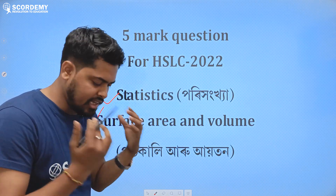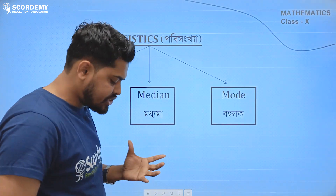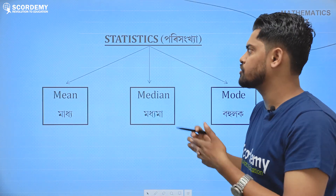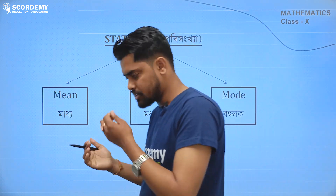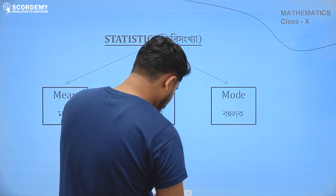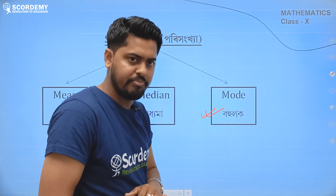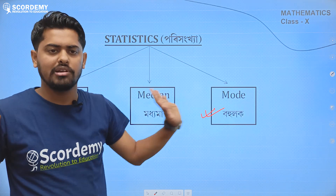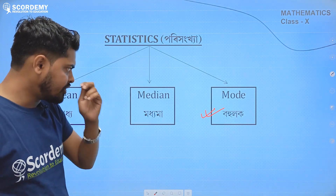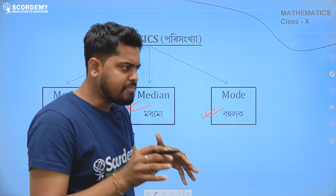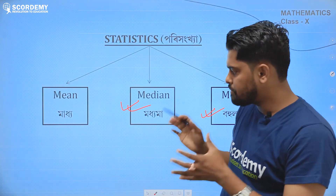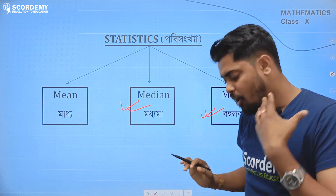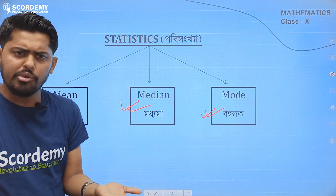I will start with statistics. Statistics has a total of 3 parts: mean, median, and mode. This is the 3rd topic and it is the 5th question. When you are in the last class, I already know the questions of the 5th question. If there are 5 marks questions, there are no fixed conditions, so there are 3 questions that are coming. If other questions come, you will get a minor question or a major question. That is why I selected it.